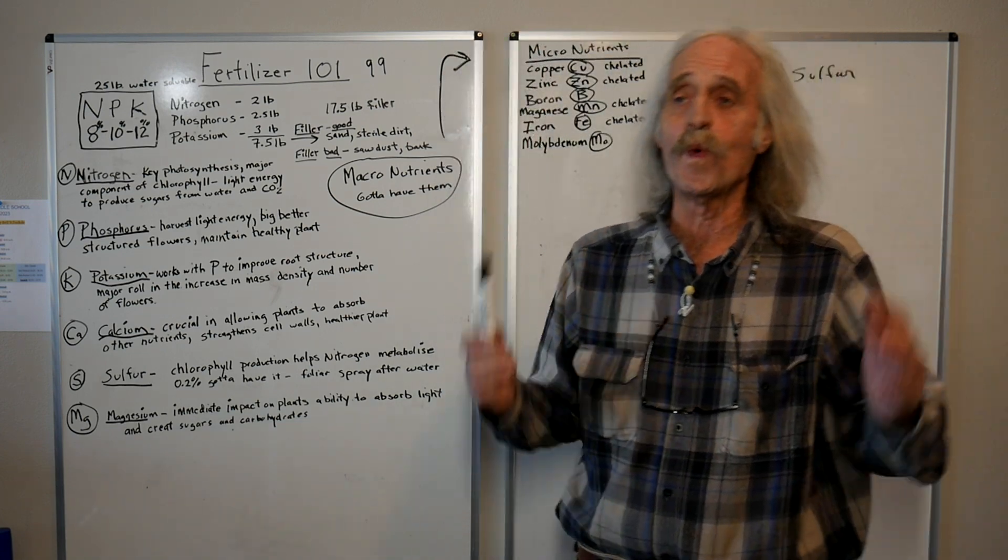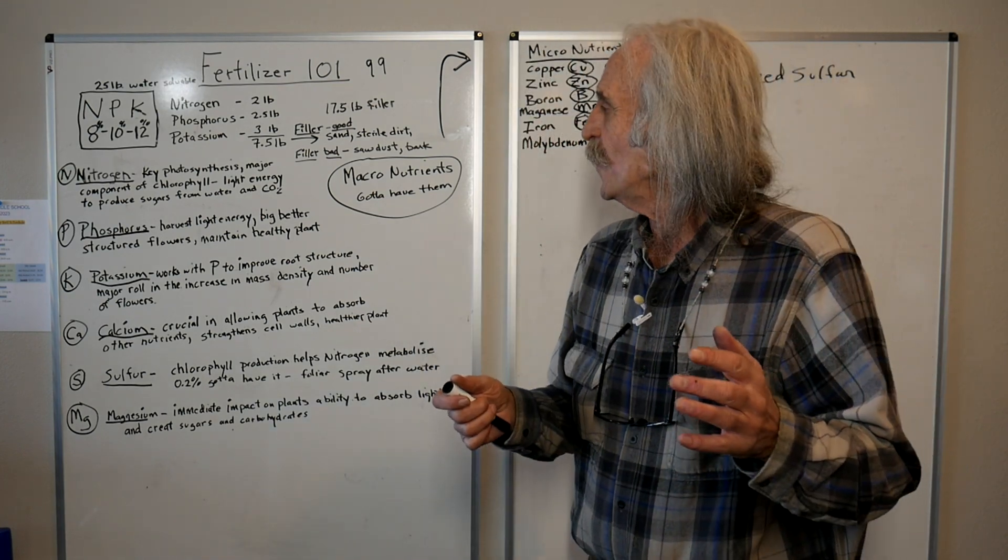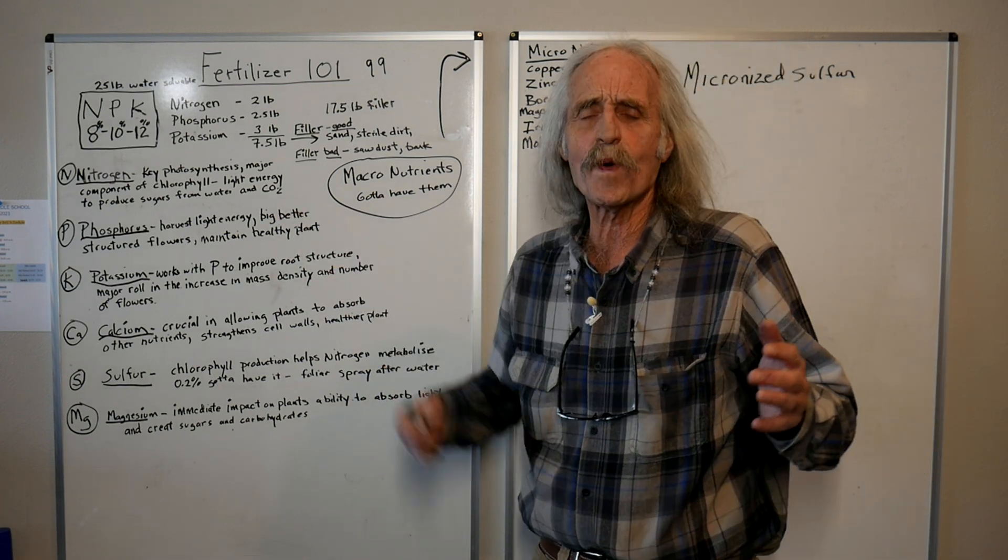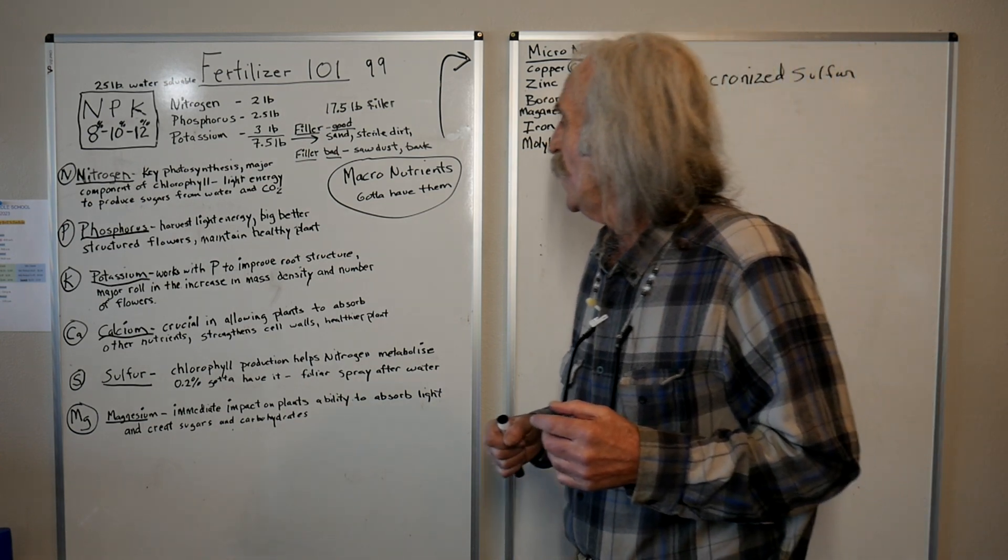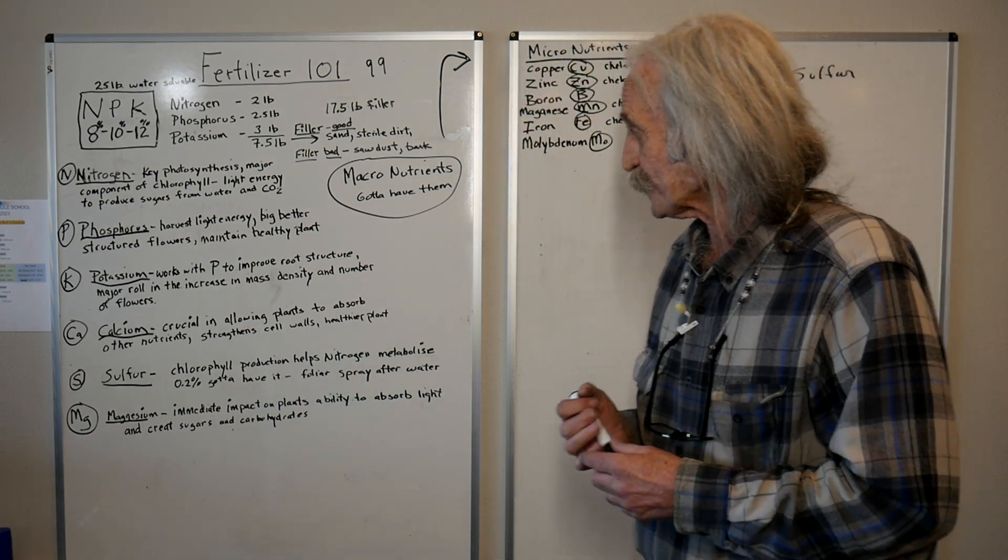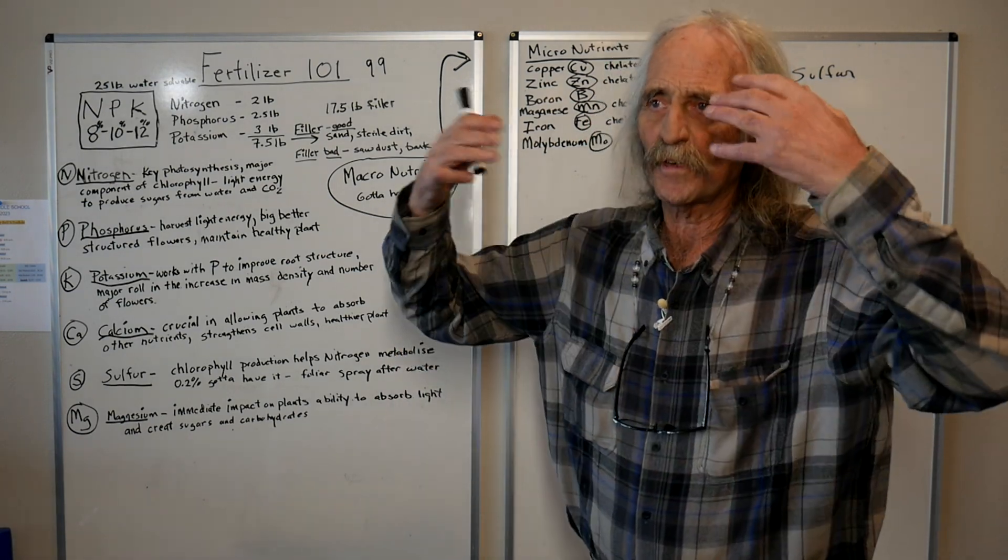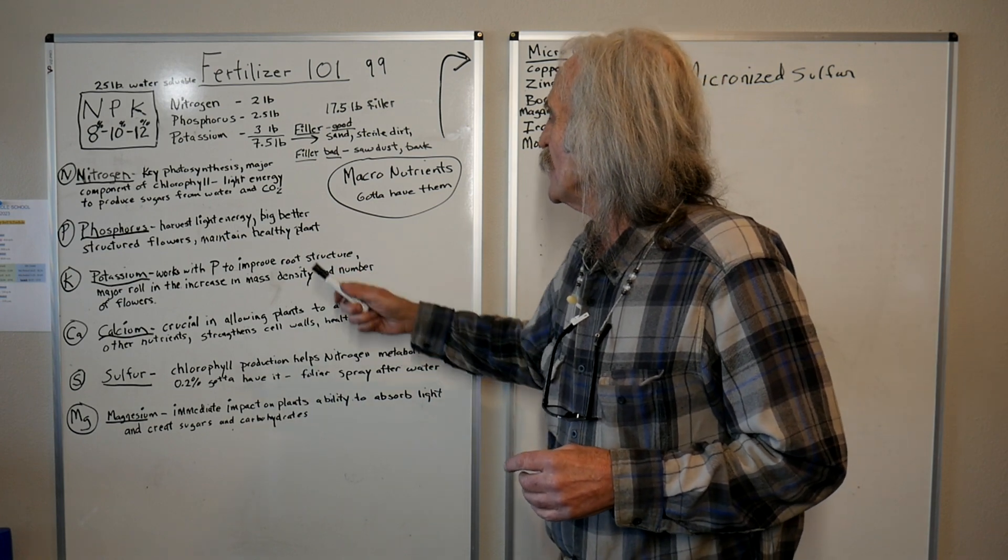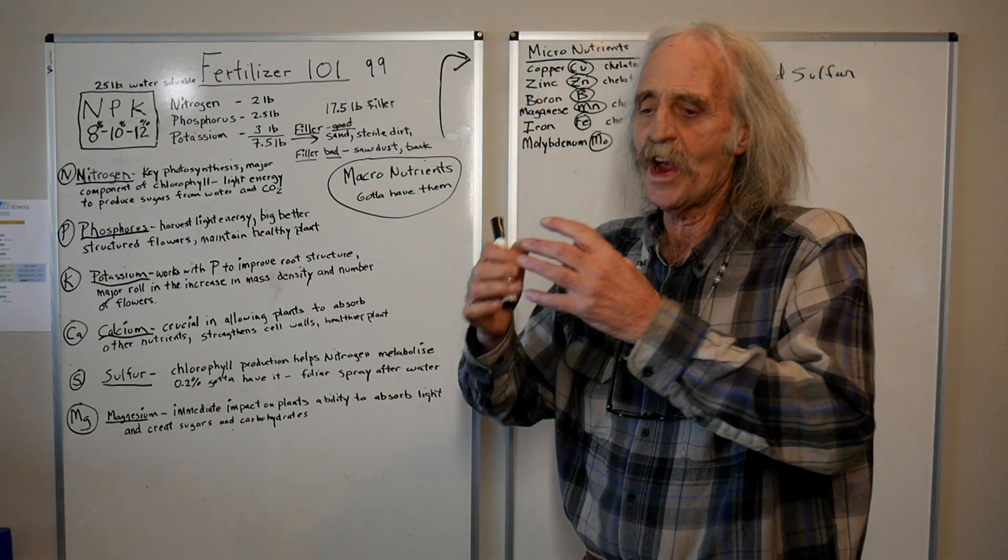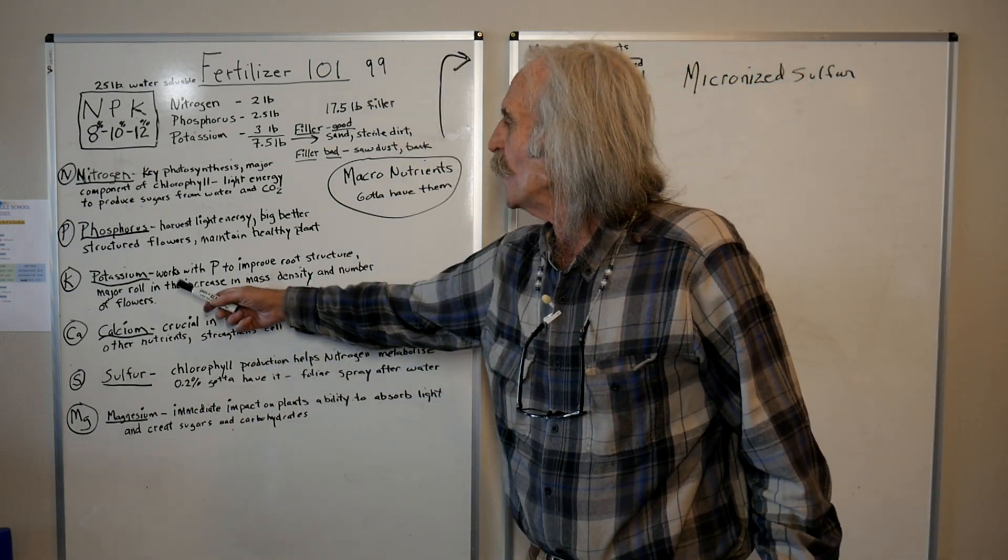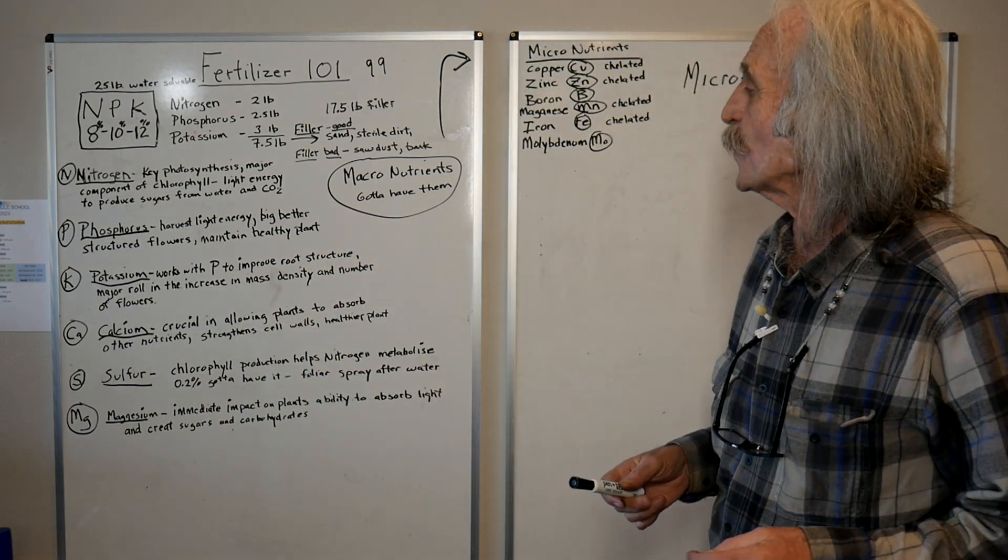Potassium works with the phosphorus to improve root structure. It acts almost like an amendment that the way it buddies up and companions with the phosphorus to help the root structure. And also the mass density, we're talking total weight here, and the number of bud points, the number of flowers, bud points. You're going to have more flowers on a plant with your potassium and it will assist the phosphorus in the root structure.